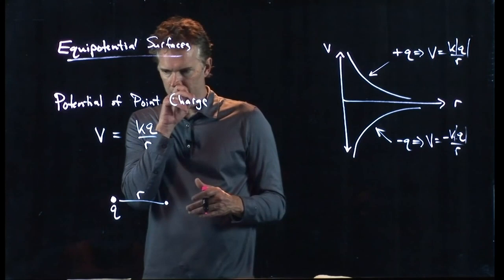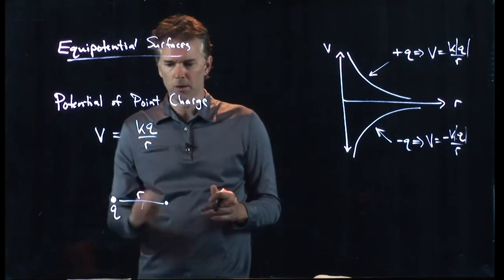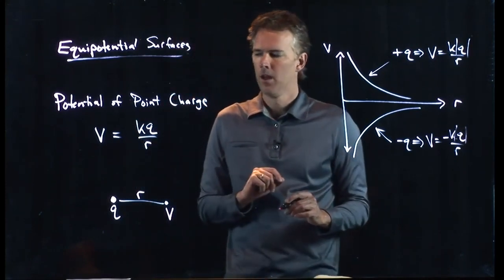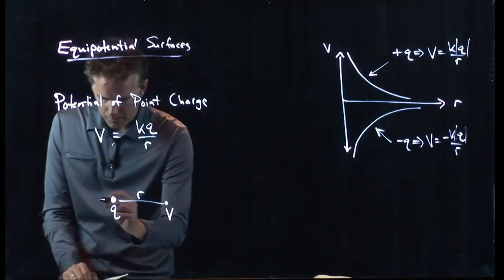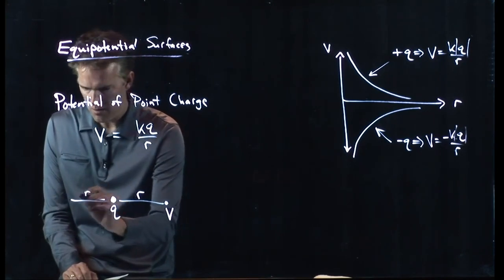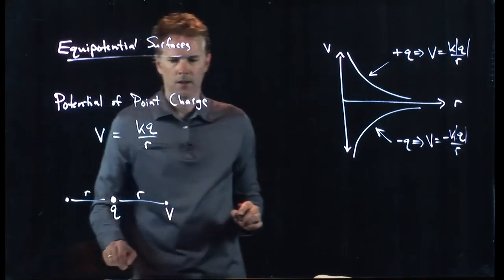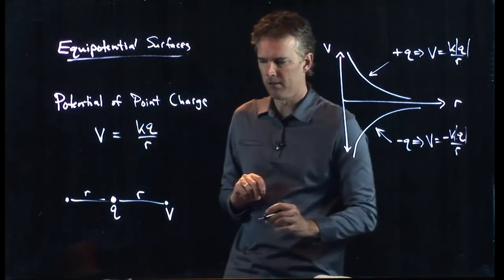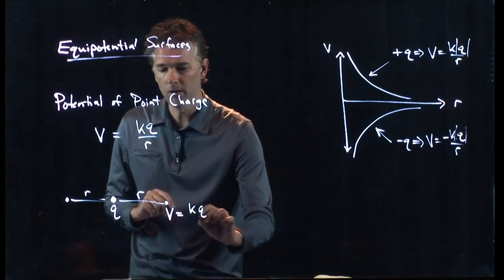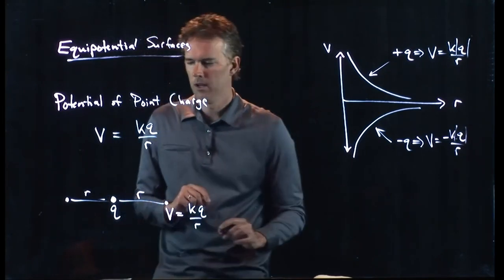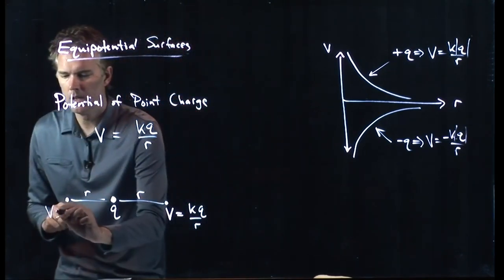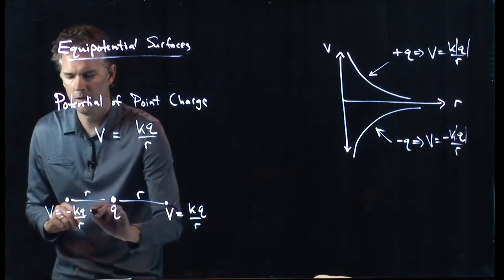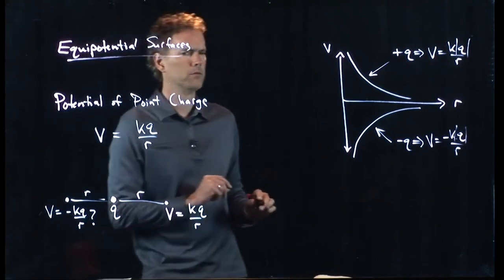But let's say we do the following question. We just showed you what the potential is here, V. It's KQ over R. But what about the potential here? Is that going to be the same thing? Is that going to be KQ over R? Or is that going to be negative KQ over R?